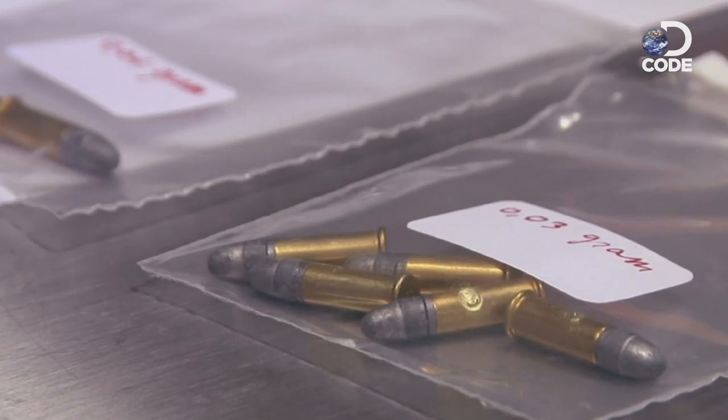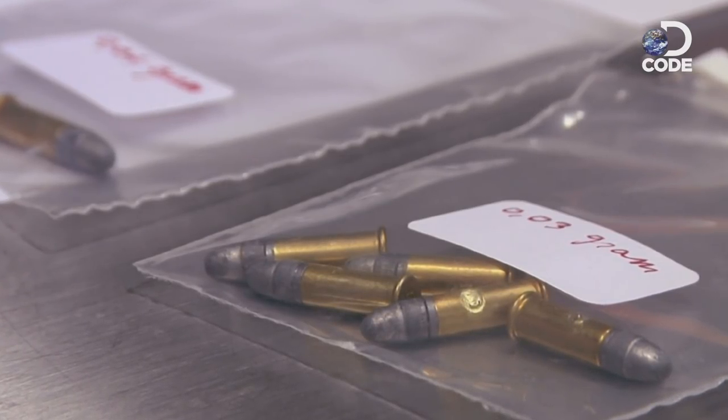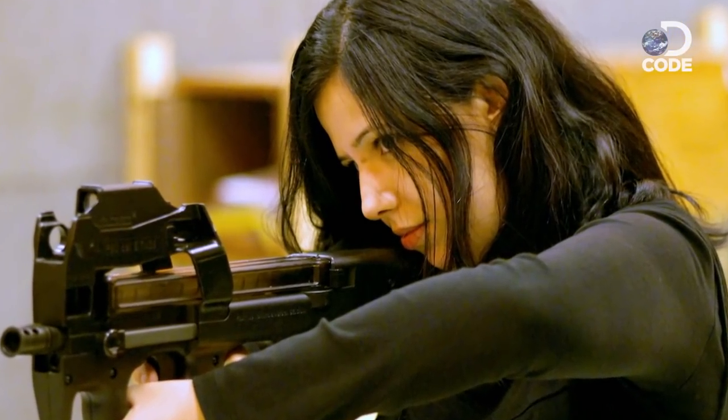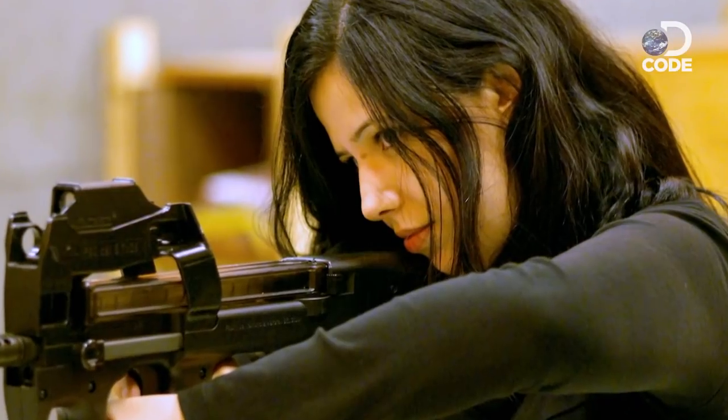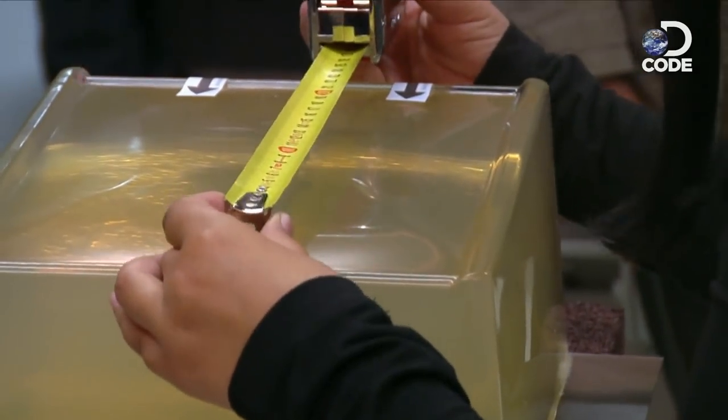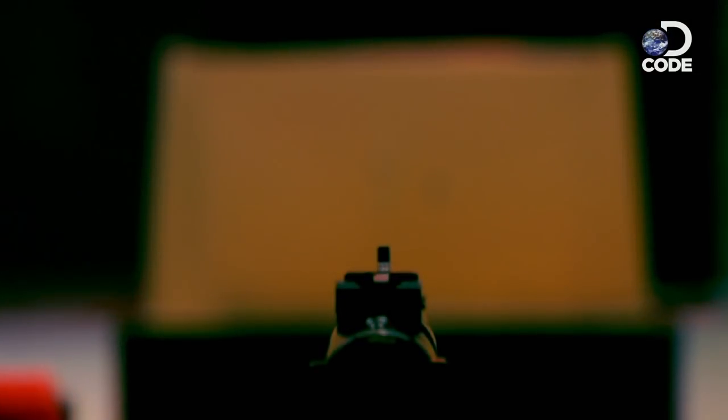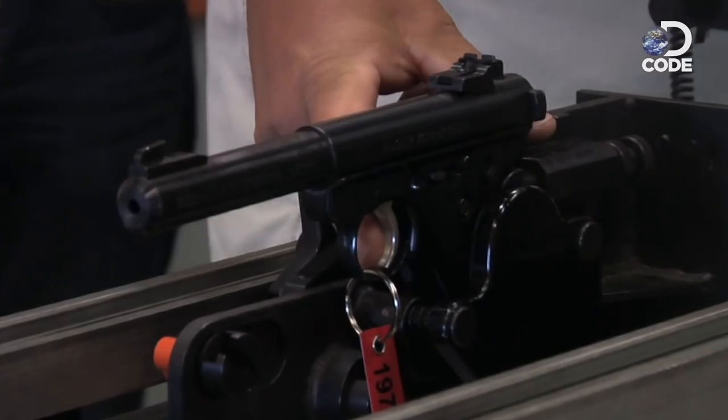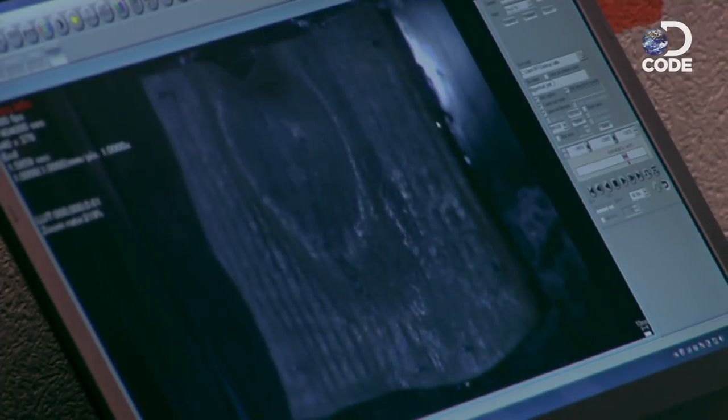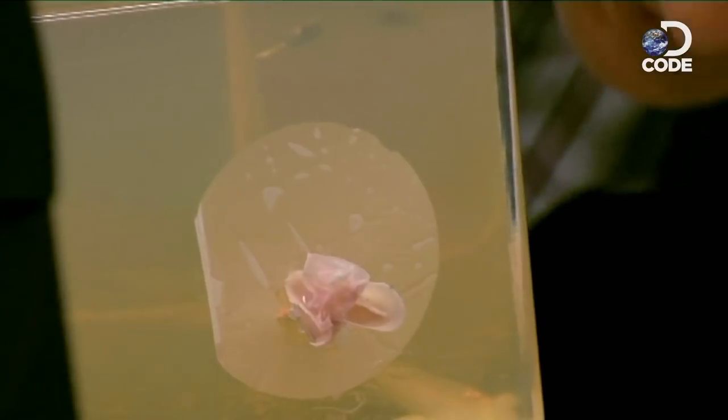And of course, there is only one way to test this. By shooting a bullet at it. They placed the new fabric over ballistic gel and pulled the trigger. The spider silk withstood the speeding bullet.